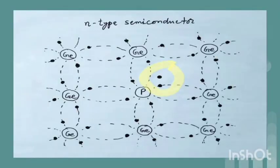When a pure semiconductor in which atoms have 4 valence electrons is doped with a controlled quantity of pentavalent atoms such as arsenic, phosphorus, tin or bismuth, which have 5 valence electrons, then the semiconductor formed is N-type. As you can see in the diagram, in N-type semiconductor an impurity atom occupies the site of the germanium atom. Four valence electrons form covalent bonds by sharing with 4 neighboring atoms while the 5th electron is comparatively free to move.